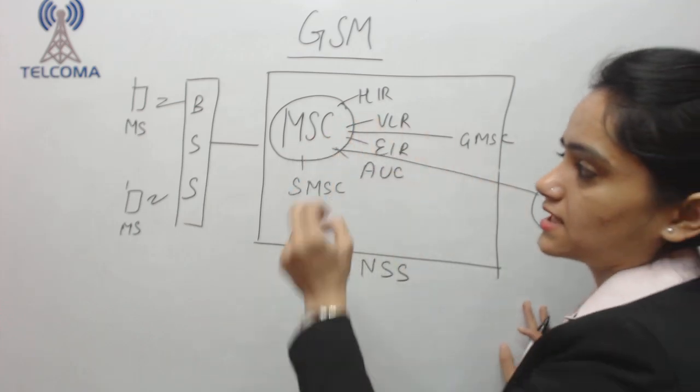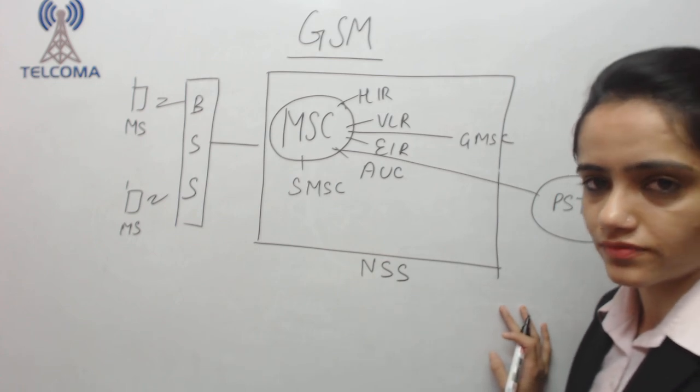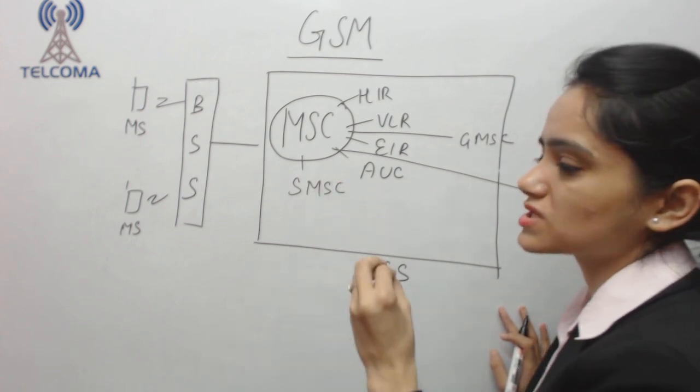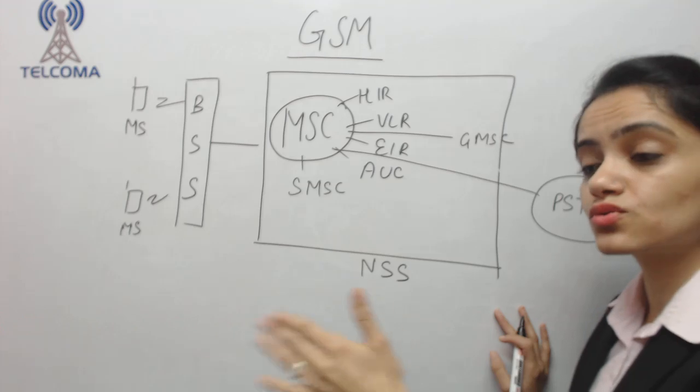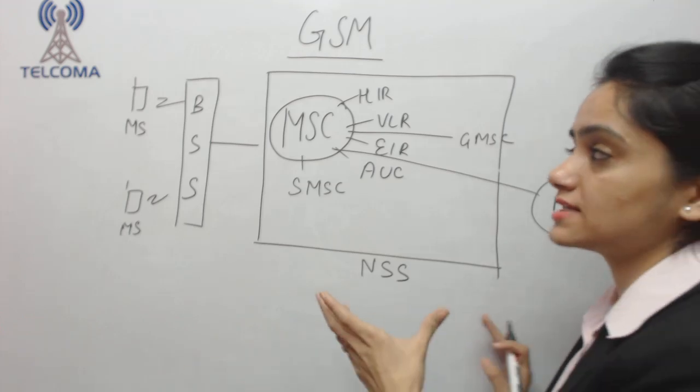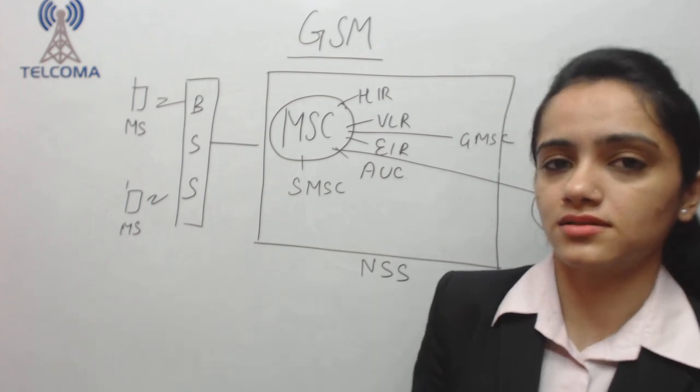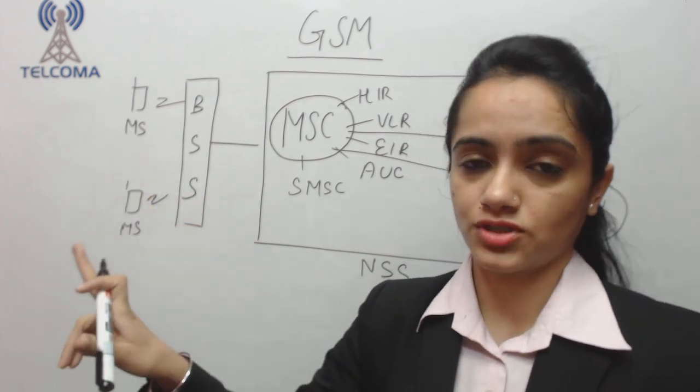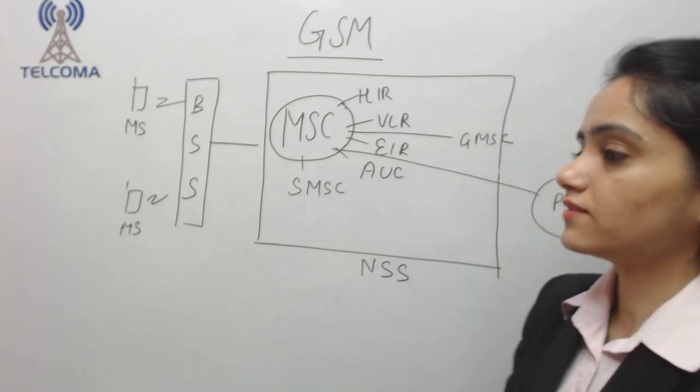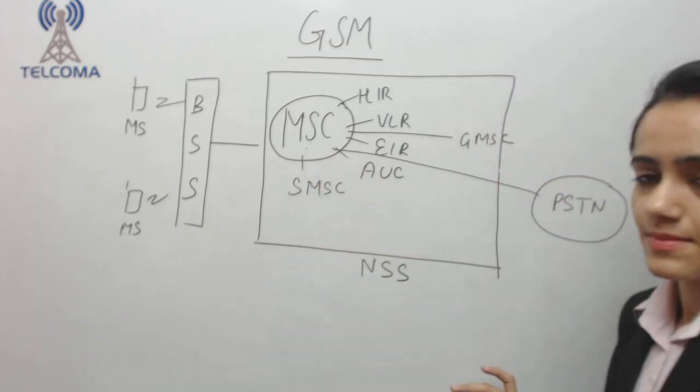Now as we know that MSC is the center controller of the network, so it has to process each and every signal. It has to route calls. That's why it's called switching, because it has to route calls from one person to another person, because my mobile station does not have any information where to route the call. The routing information is there in the MSC.